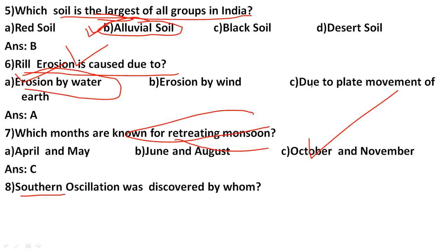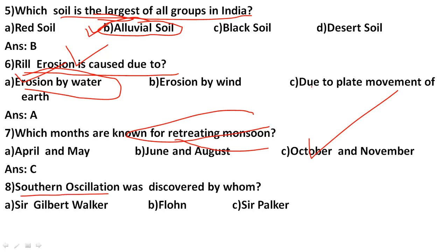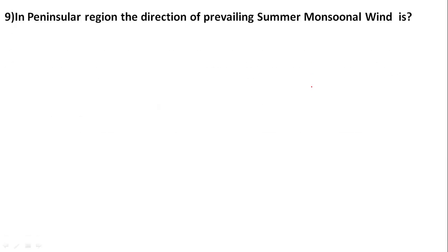Southern Oscillation was discovered by whom? Southern Oscillation was discovered by Sir Gilbert Walker.